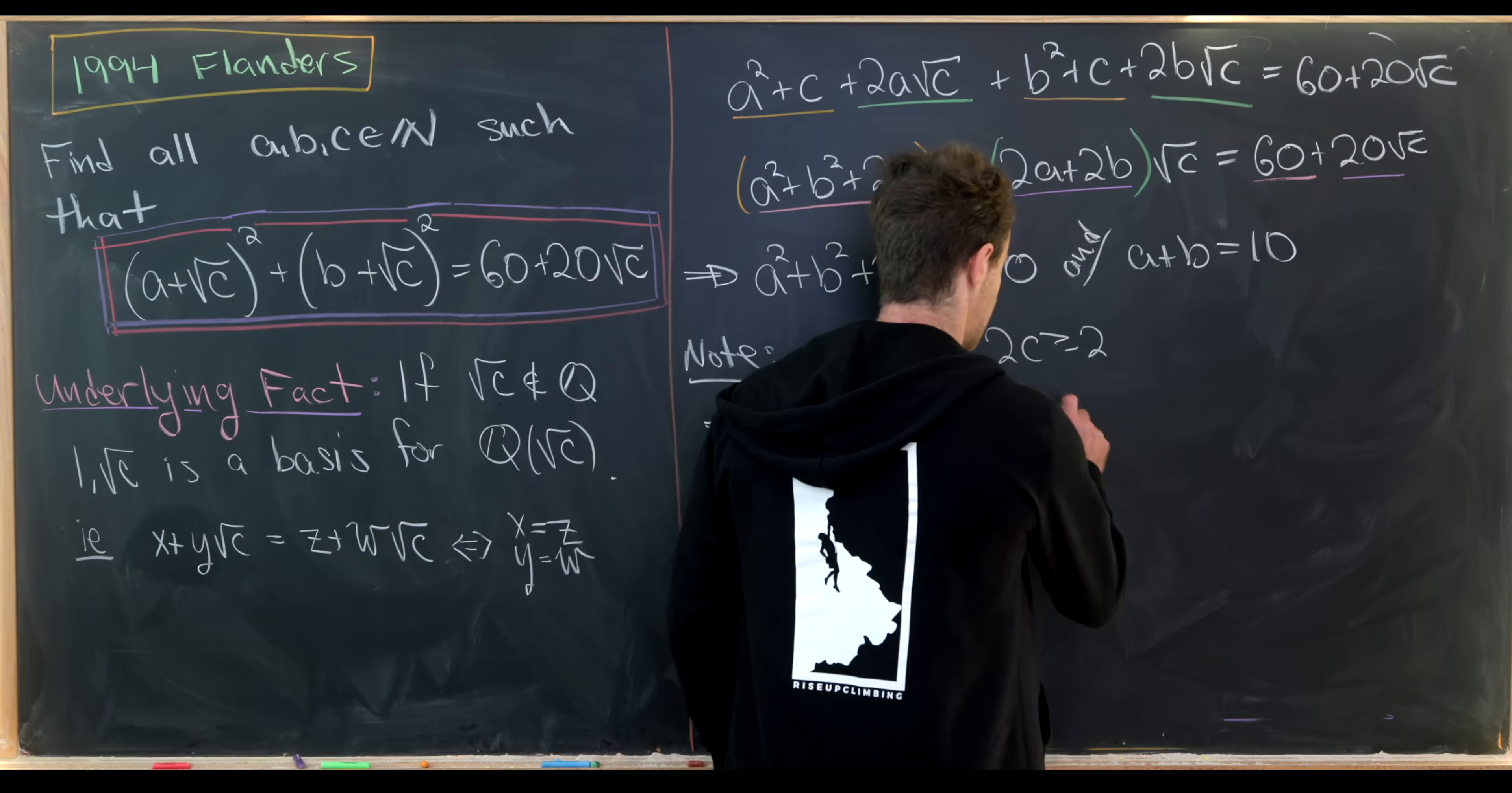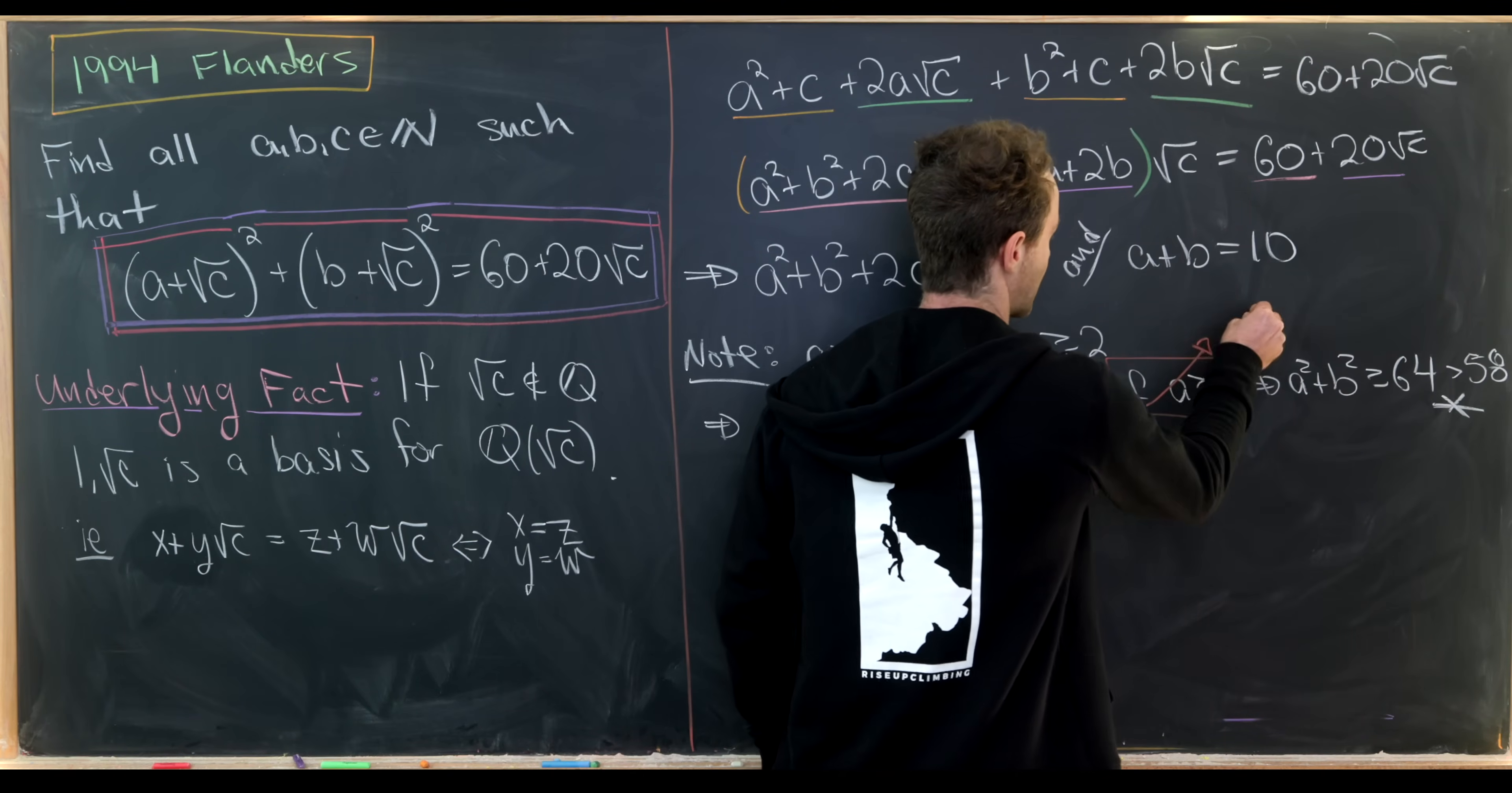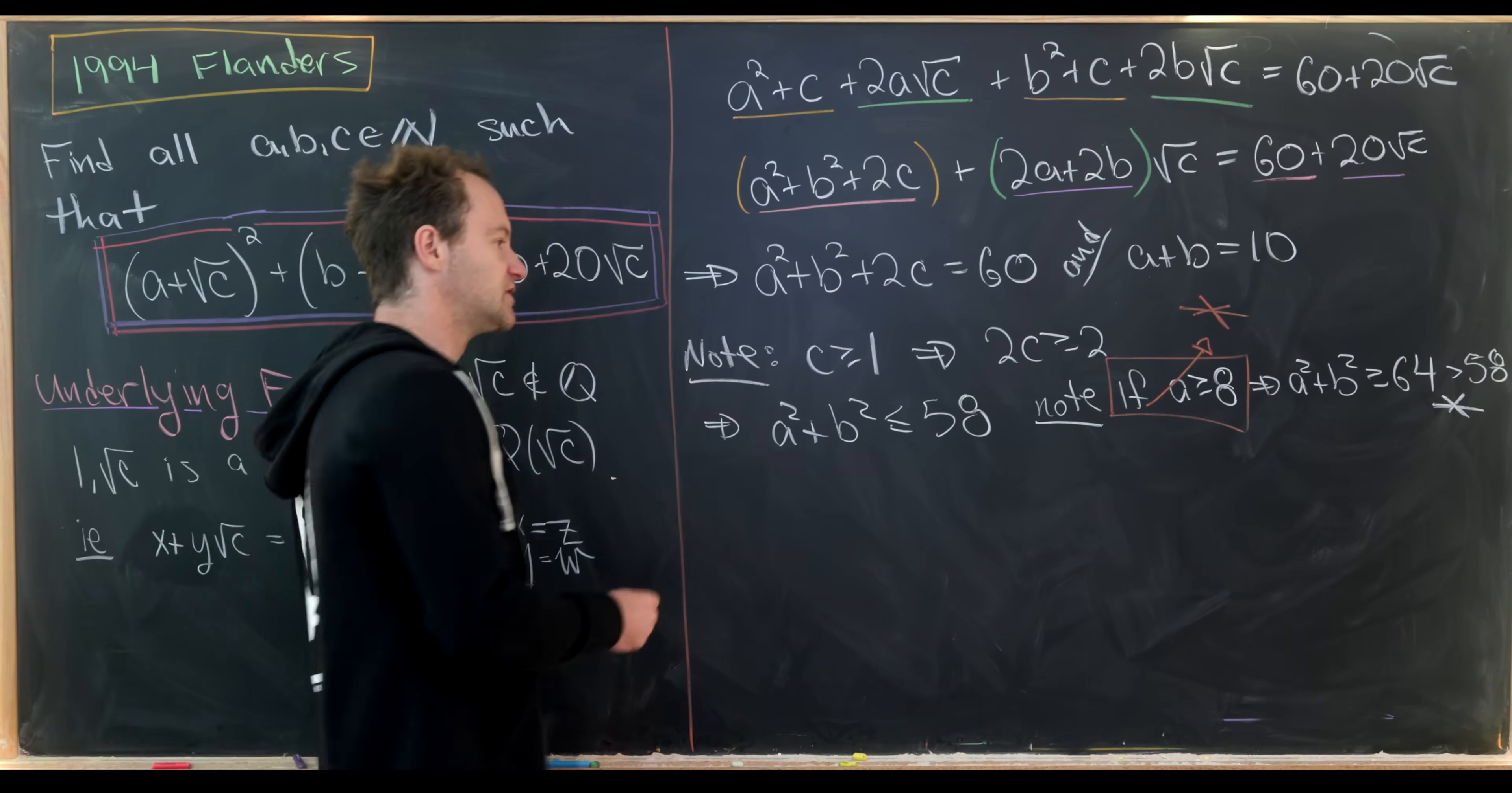Okay, so now let's notice that if a is bigger than or equal to 8, or symmetrically, b is bigger than or equal to 8, then we get a squared plus b squared is bigger than or equal to 64, which is bigger than 58, which is a problem. Okay, so just to reiterate, this is a problem. It would lead to a contradiction. So that means a cannot be bigger than or equal to 8. So that means a can only be 1 through 7. But in fact, a cannot be equal to 2 or 1 either, because that would correspond to the case when b is equal to 8 or 9 or 10.